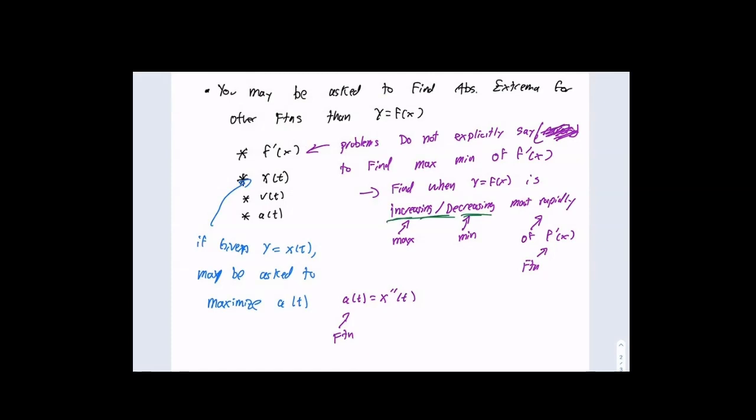A lot of you will think: the derivative of velocity — isn't that acceleration? Yes, but we want to treat velocity as the function we're trying to optimize, to maximize and minimize. Same with f prime of x: if I take the derivative of f prime, isn't that f double prime? Yes, but more importantly it's the derivative of f prime, and since we're trying to find the max and min of f prime, we set that derivative equal to zero.